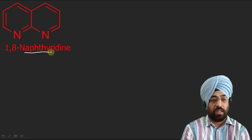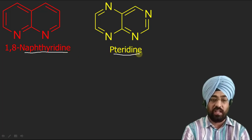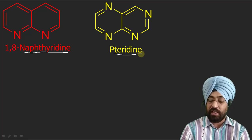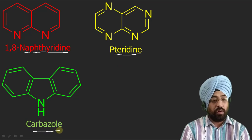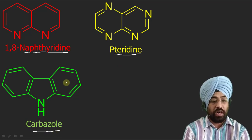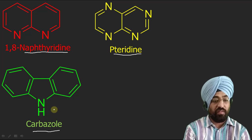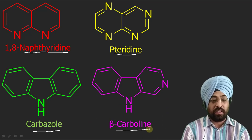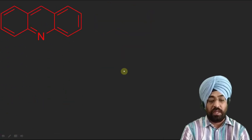The next compound's name is 1,8-naphthyridine. This compound is called pteridine. Now this is important — it is called carbazole. You can see it is a fused compound in which three rings are fused: two six-membered rings fused with a five-membered ring. So it is the carbazole ring. This compound is called beta-carboline — again a fused heterocycle containing three rings.